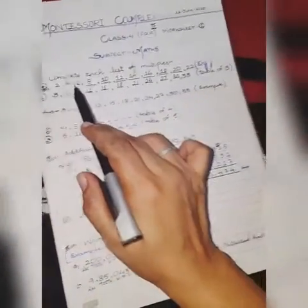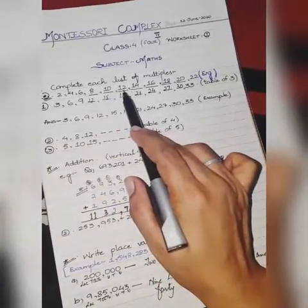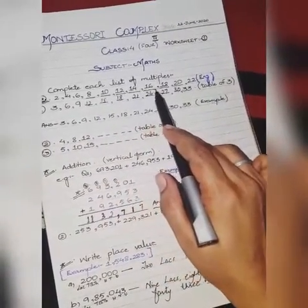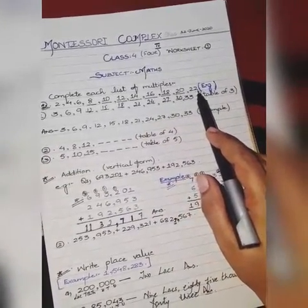2 ones are 2, 2 twos are 4, 2 threes are 6, 2 fours are 8, 2 fives are 10, 2 sixes are 12, 2 sevens are 14, 2 eights are 16, 2 nines are 18, 2 tens are 20, 2 elevens are 22.